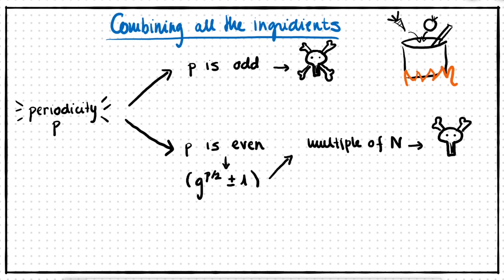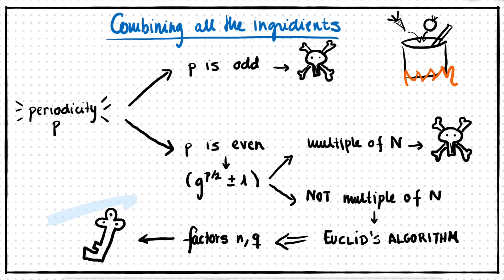We're not quite at the end. If you remember, we now have to use Euclid's algorithm to find the actual factors we're searching for. And now, we can finally get what we're looking for, and decrypt the data.